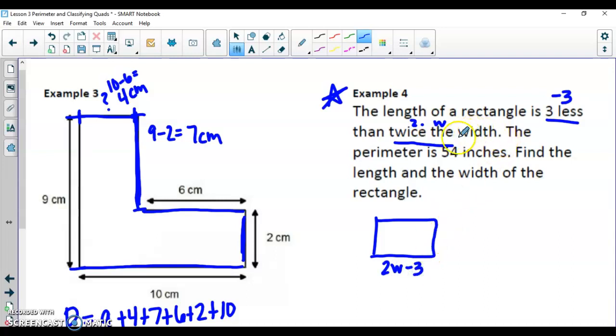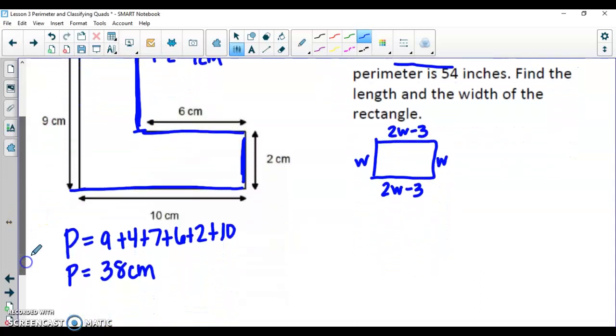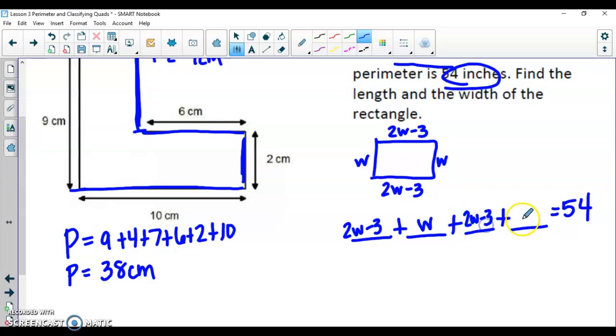It also tells me that the perimeter is 54 inches. Now what this takes into account is that I'm just using w to represent my width because remember the length was based off of this. So find the length and the width of the rectangle. So that would tell me this side is w and this side is 2w minus 3 as well because on rectangles opposite sides are the same. So my perimeter is 54 inches. That tells me I'm adding up all four sides. And after I add up those four sides, I'm going to get 54 inches. So if I go around, I have 2w minus 3, I have a w, I have 2w minus 3 and another w.